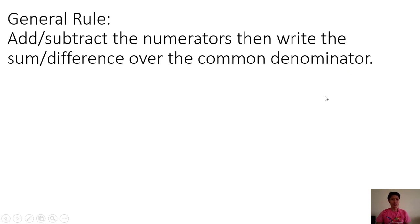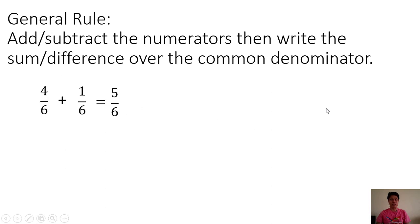From the given examples, we have the general rule: add or subtract the numerators, then write the sum over the common denominator. For example, 4/6 plus 1/6 — just add 4 and 1. 4 plus 1 is equal to 5, then copy the common denominator, which is 6. Another example: 7/8 minus 4/8 — 7 minus 4 is 3, then copy the common denominator, which is 8.